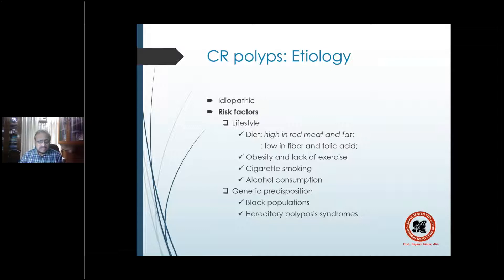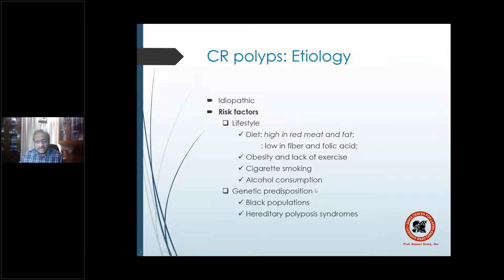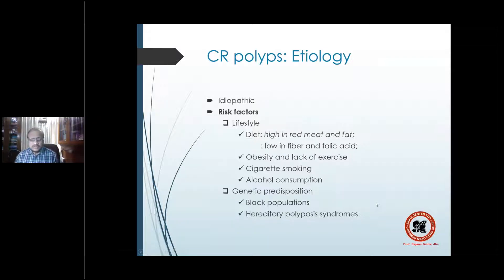Etiological factors are most commonly idiopathic, but certain risk factors can be singled out. Diet high in red meat and fat, low in fiber and folic acid, obesity, lack of exercise, cigarette smoking, and alcohol consumption are all propagative factors. Other factors include genetic predisposition, more commonly seen in Black populations and hereditary polyposis syndromes.